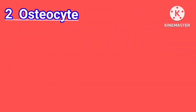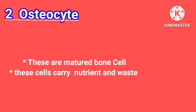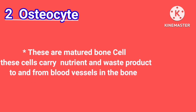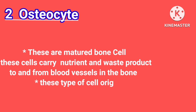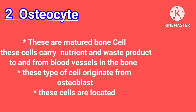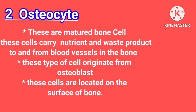Osteocyte. These are matured bone cells. These cells carry nutrients and waste products to and from blood vessels in the bone. These type of cells originate from Osteoblasts, and these cells are located on the surface of bone.